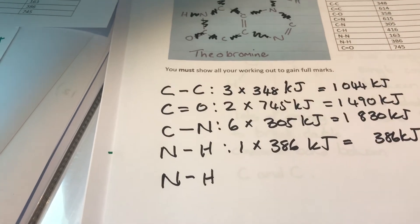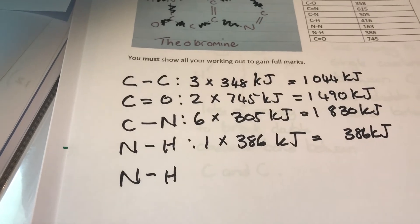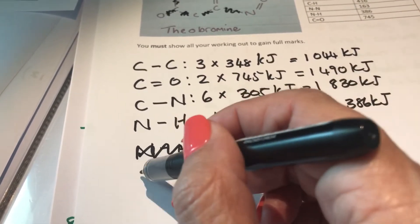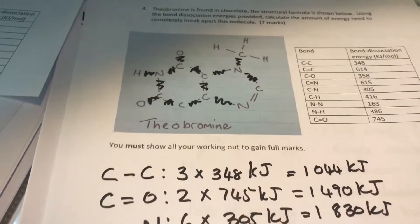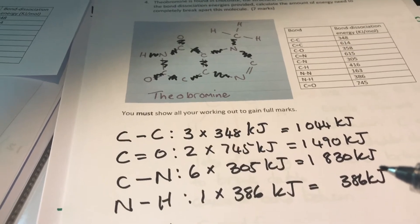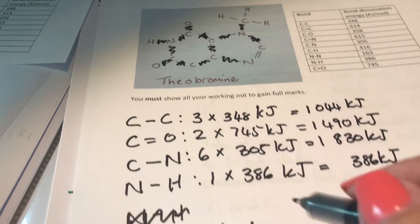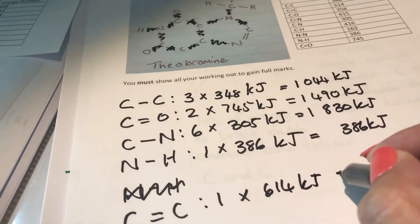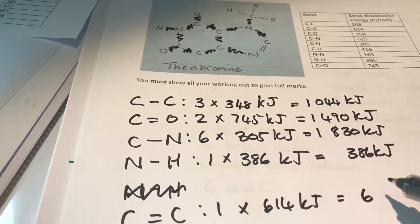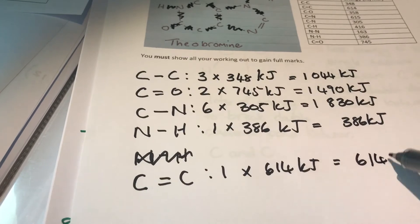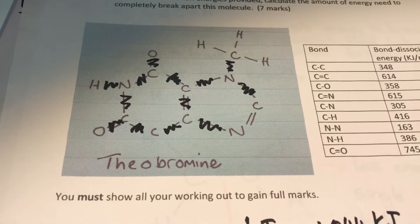Sorry, I've just done nitrogen single bond hydrogen — I was repeating it. So the next one is carbon double bond carbon, this one over here. That's one of them; I don't see any more carbon double bond carbon, so that means there's only one, and that is 614 kilojoules if I look it up on the table — 614 kilojoules, there's only one.